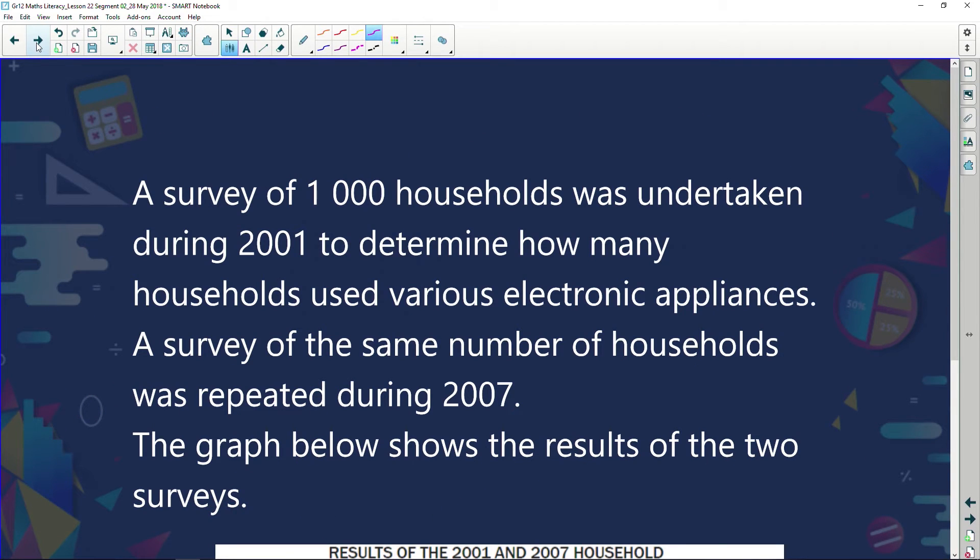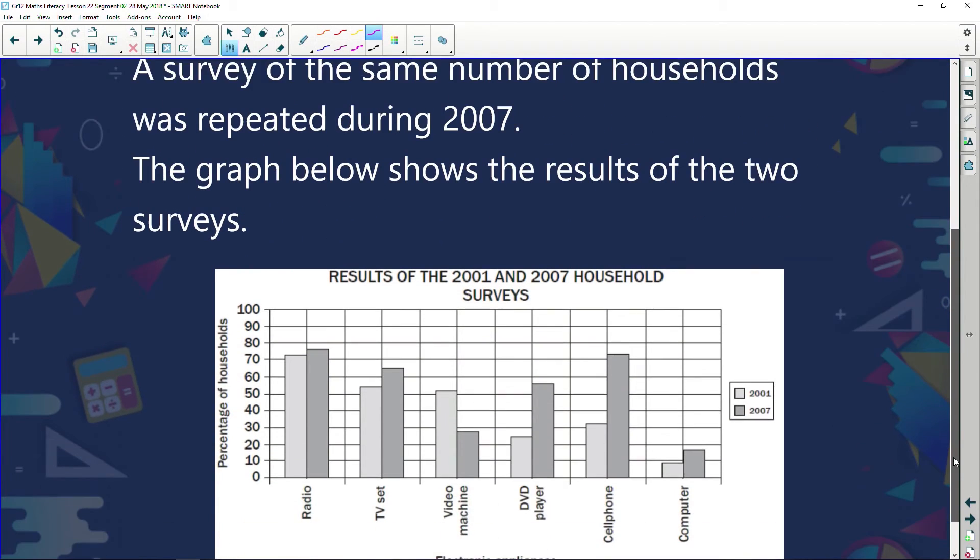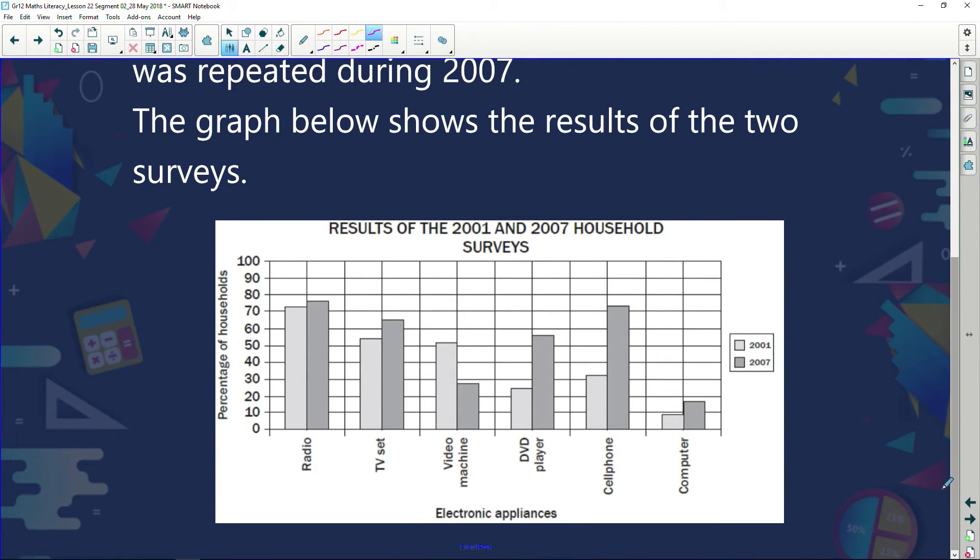Let's have a look here. A survey of a thousand households was undertaken during 2001 to determine how many households use various electronic appliances. A survey of the same number of households was repeated during 2007. The graph below shows the results of the two surveys. So, let's have a look here. We've now got how many households use radio, TV sets, video machines, DVD players, cell phones, and computers. And what you will notice is this, that we've got two columns lying next to each other. In other words, we have a double bar graph.